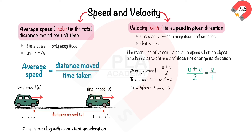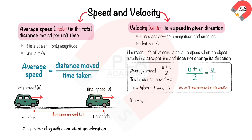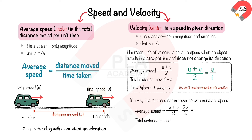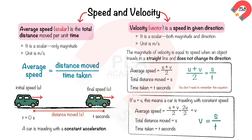You don't need to remember this equation. If u equals v, this means the car is traveling at constant speed. So the average speed is v, total distance moved is s, total time is t. Therefore: v = s / t.